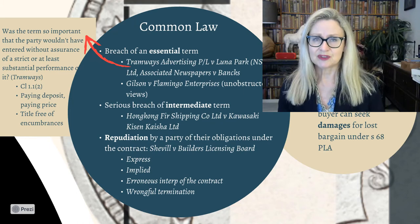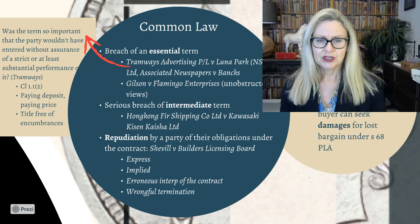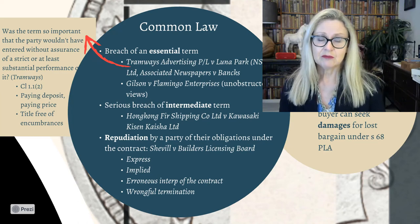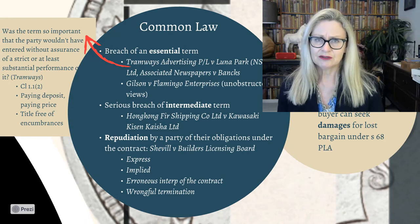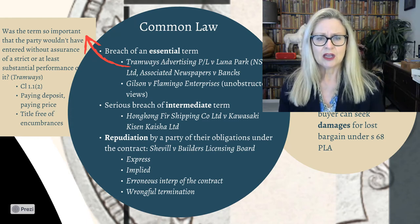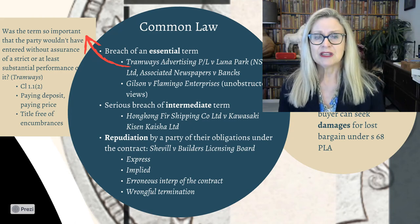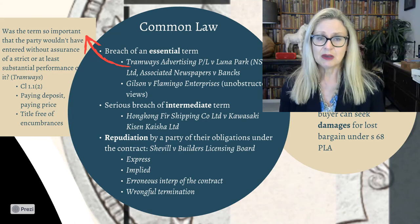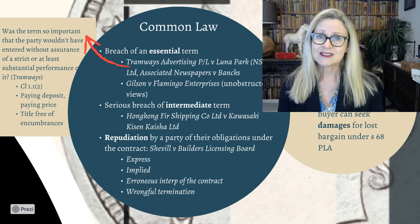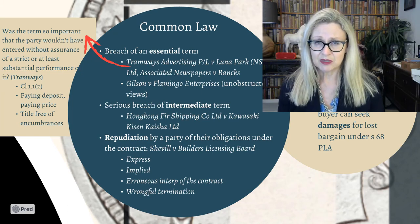The final trigger is repudiation of obligations under the contract — the key case being Sheville. Repudiation may be express ('I don't want to perform this contract anymore') or implied from conduct, in which case it must be clear the repudiating party is wholly and finally disabled from performing. It might also arise from a party clinging to an erroneous interpretation of the contract, or from wrongful termination. Critically, if you terminate incorrectly, the other party can treat that as a repudiation and accept it, then claim damages.